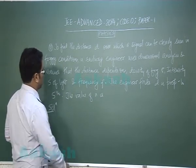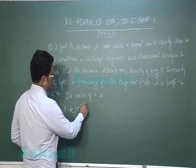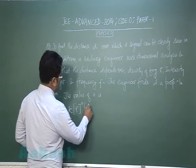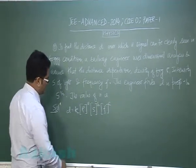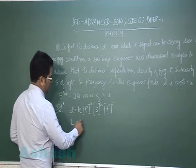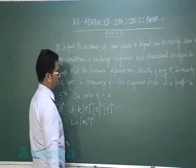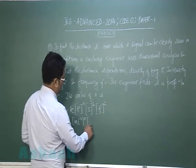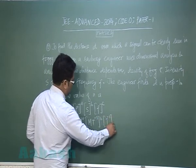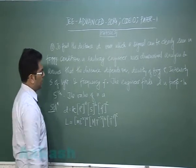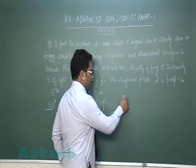Dimensionally, the distance D would be k times density raised to power A, intensity of light raised to power B, and frequency raised to power C, where k is dimensionless constant. D is L, rho is ML^-3 raised to power A, intensity is power per unit area MT^-3 raised to power B, and frequency is T^-1 raised to power C. You get B as 1 by 3, therefore the value of n has to be 3.